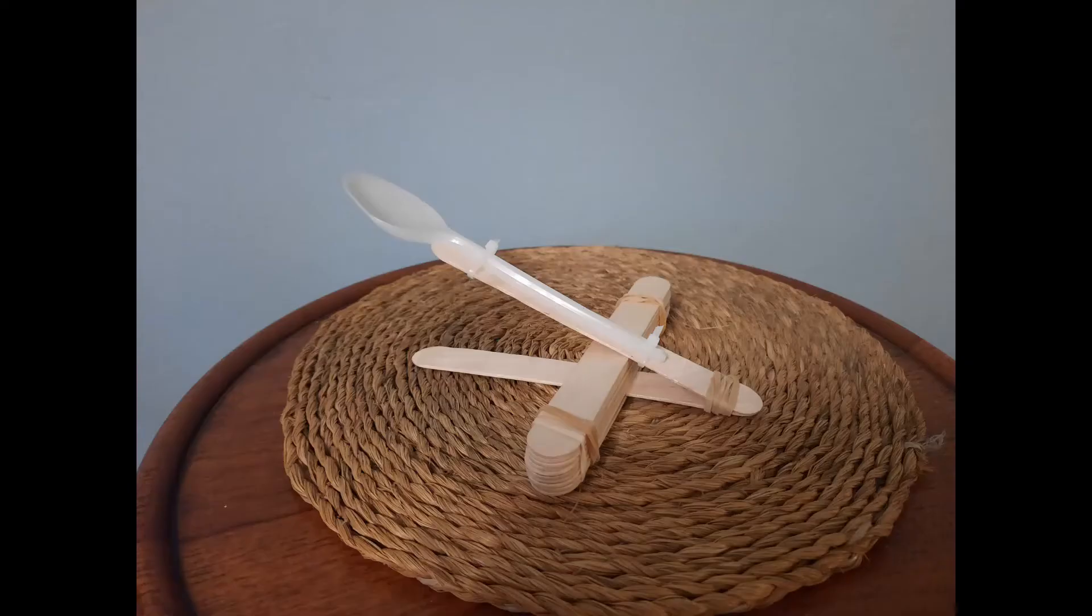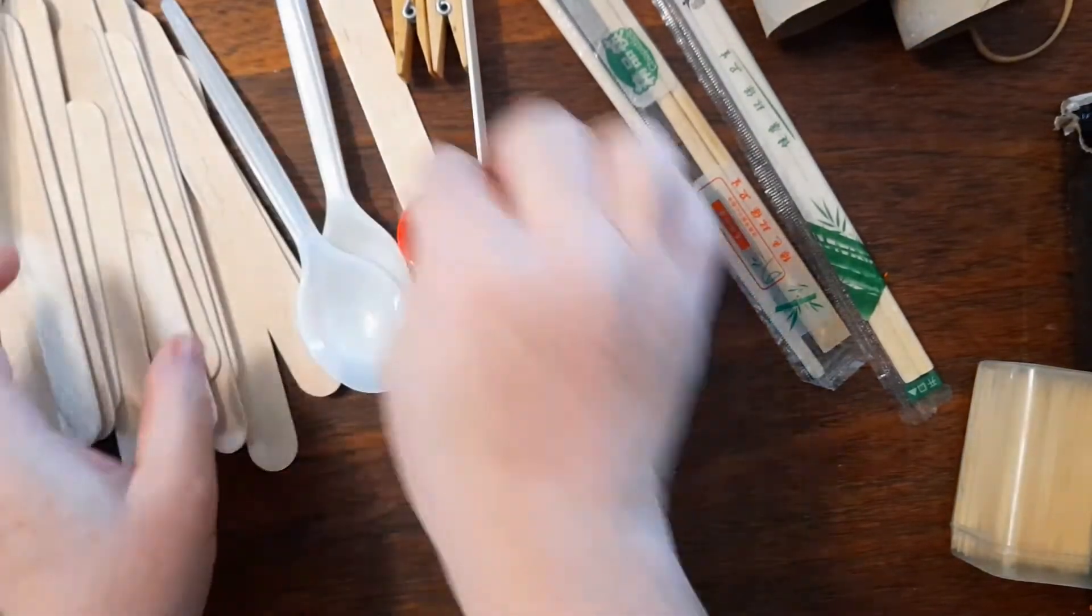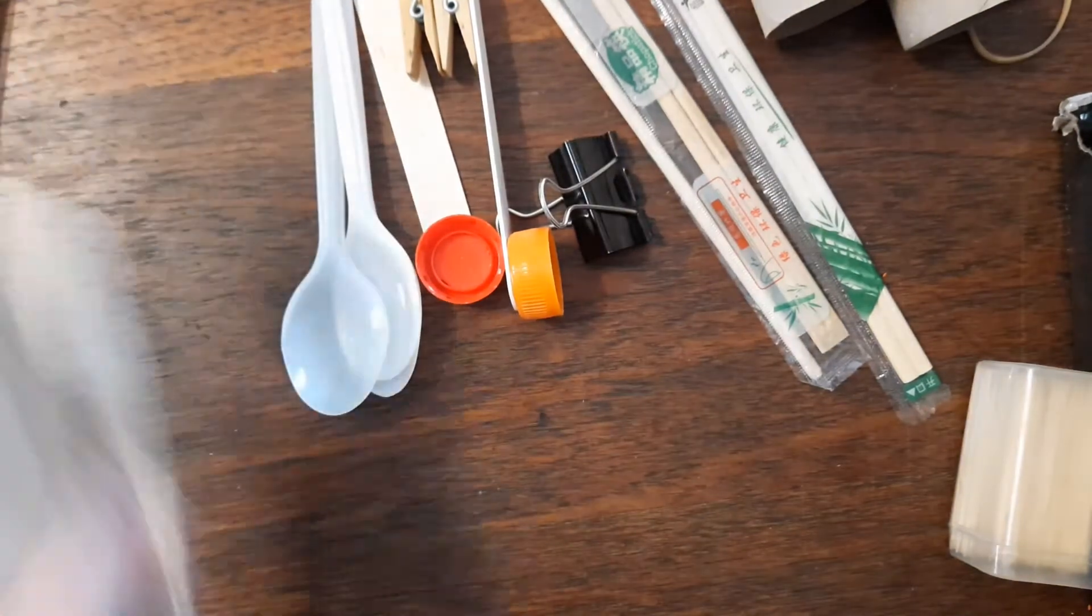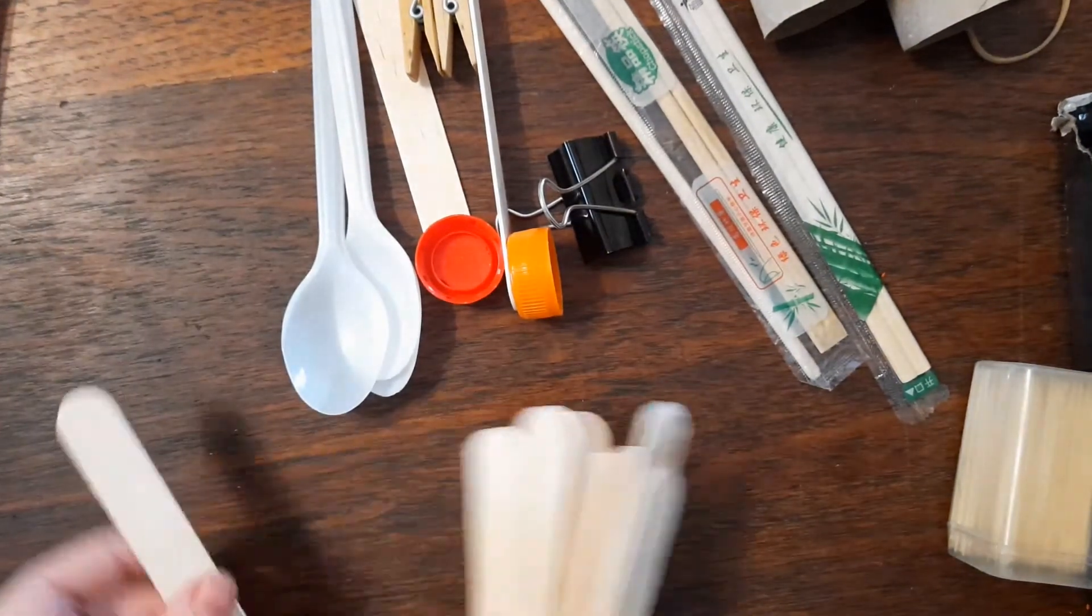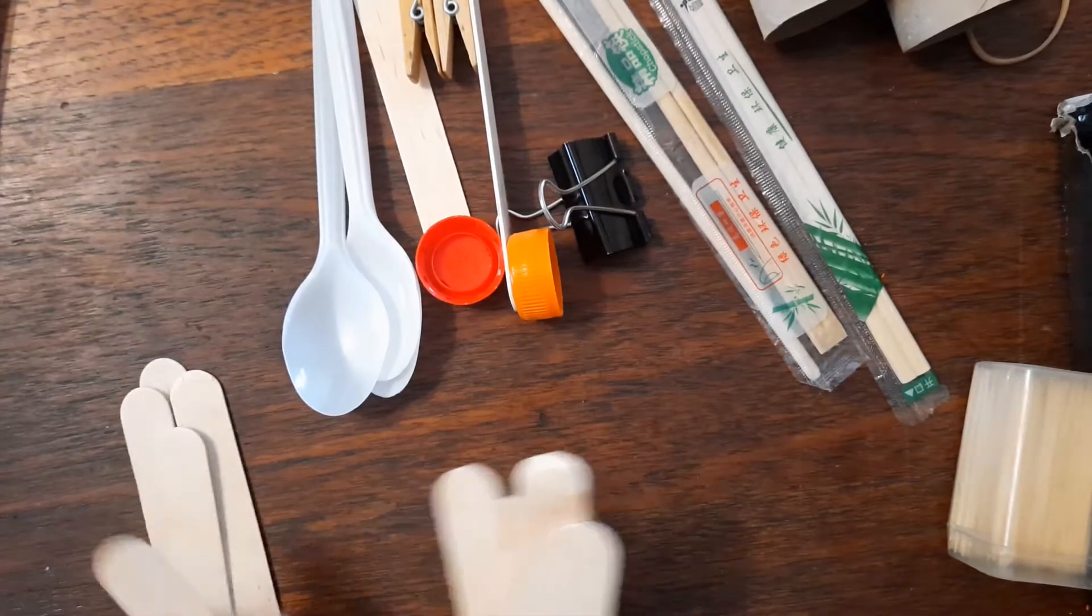Make a catapult with ice cream sticks. You'll need about 12 ice cream sticks, a plastic spoon, some rubber bands and cable ties. Instead of a plastic spoon you could substitute a bottle top.